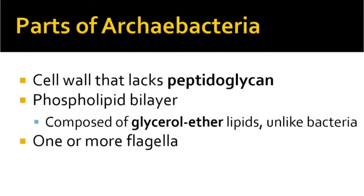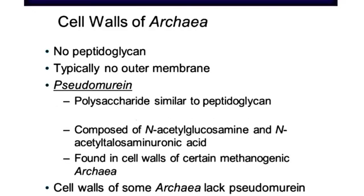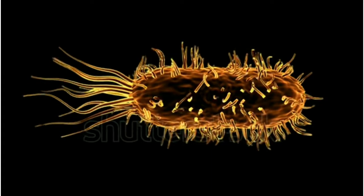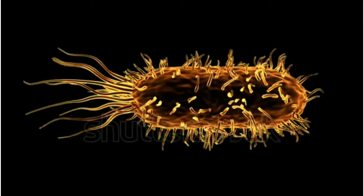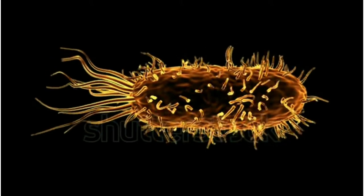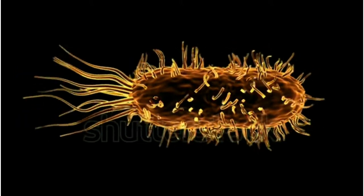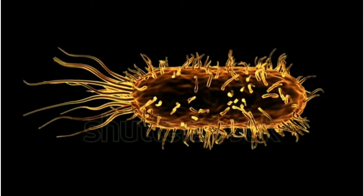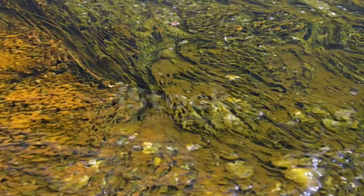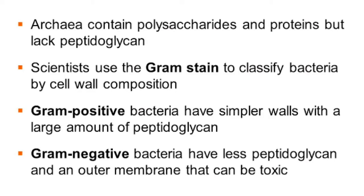The cell wall is composed of different polysaccharides and proteins with no peptidoglycan. Instead, their cell wall is made up of polysaccharide pseudomurein — meaning false murein. The presence of 16S rRNA makes them unique and helps in placing them in a separate domain called Archaea.